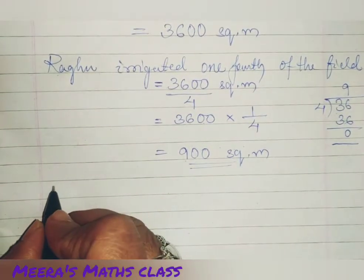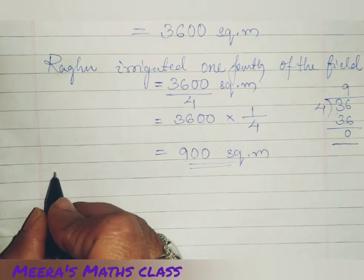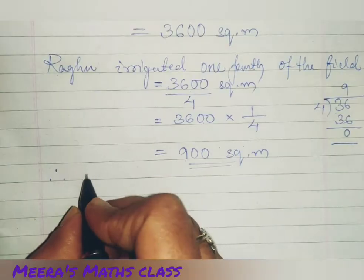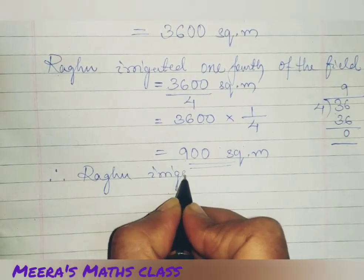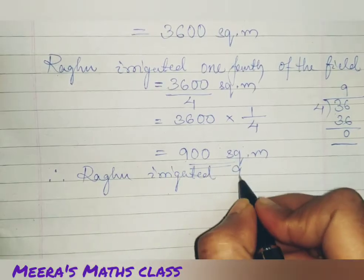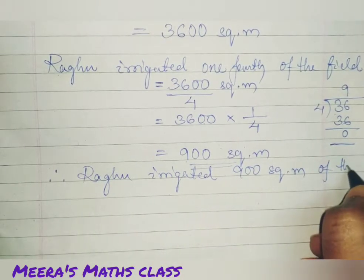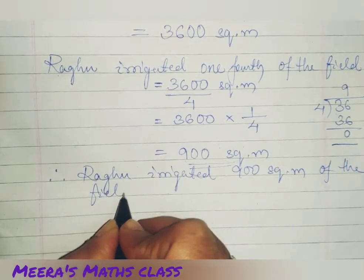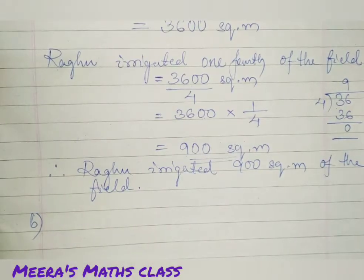Now, what you are going to do? Write, conclude the answer. Therefore, Raghu irrigated 900 square meter of the field. Now, let's go to number B.